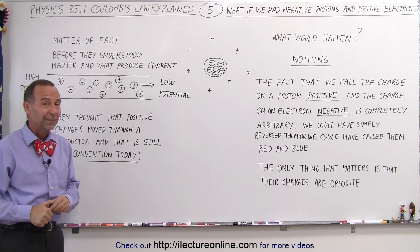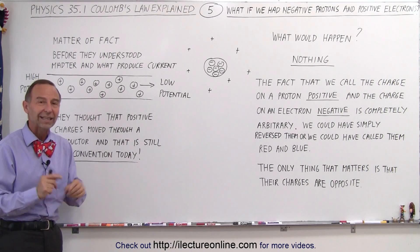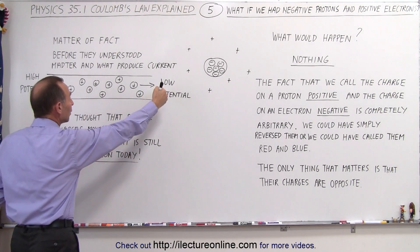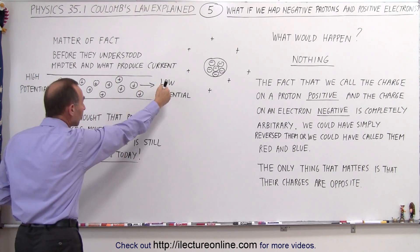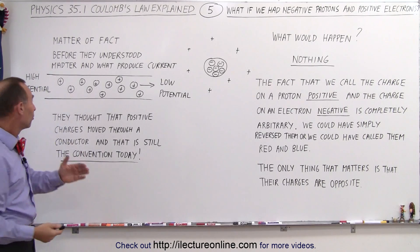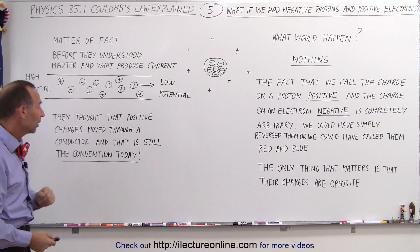And guess what? That's still the convention today. We never changed that. Even though we're now fully aware that it's the negative electrons are moving through the conductor from a low potential to a high potential, we just ignore that and we just assume that it's positive charges moving from high to low potential.